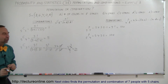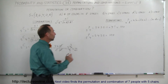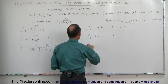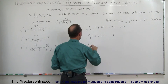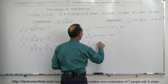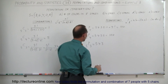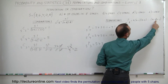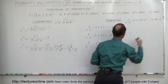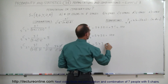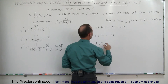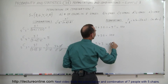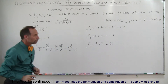Now let's find the permutations with five colors and three spaces. P(5,3): five minus three is two, plus one is three, so we stop at three — giving us five times four times three, which equals 20 times three, or 60 permutations.